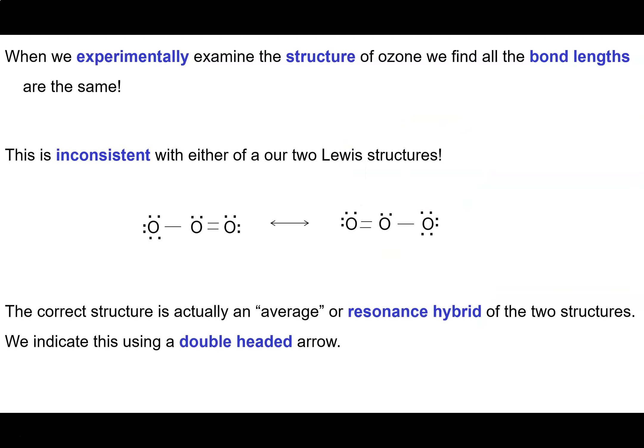However, there's something interesting. When you look at the experimental structure of ozone, you don't find a short double bond and a long single bond. What you find is that all of the bond lengths are the same. That doesn't make any sense. It's inconsistent with both of the Lewis structures that we've got. The reason is, there isn't a long bond and a short bond. There's only one type of bond.